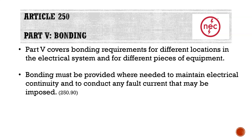Bonding must be provided where needed to maintain electrical continuity and to conduct any fault current that may be imposed. Way back in our first lecture, we went over the five requirements we need to meet in terms of grounding a system. Two of those points were: one, to maintain continuity of all normally non-current-carrying metal parts, and two, to provide a low-impedance path back to overcurrent-protected devices — accomplished by means of bonding.